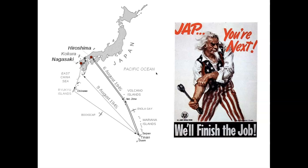The idea was to scare Japan into thinking we had a complete, huge arsenal of these new weapons — though we only had three. We tested one at the Trinity test site in New Mexico, which you can actually visit today. Then we had two more bombs. We dropped leaflets over Japan warning we had this new weapon and would drop it unless they surrendered. Of course they didn't believe us, so we started dropping the bombs.